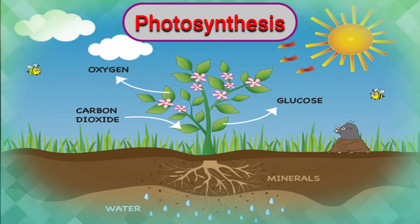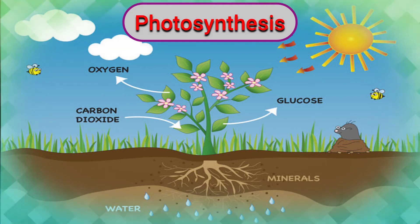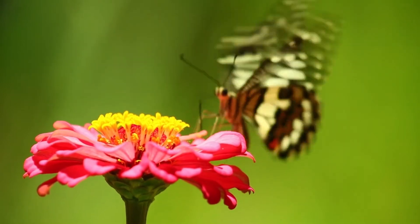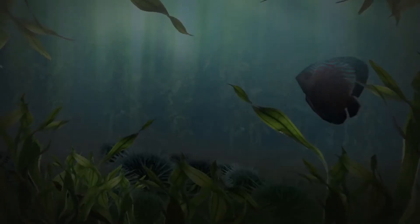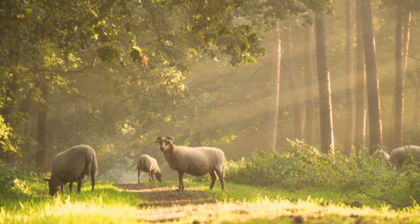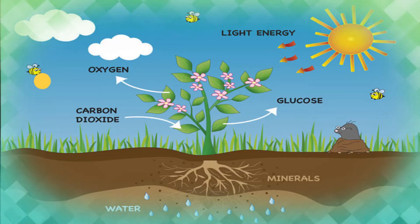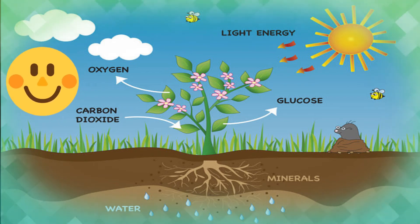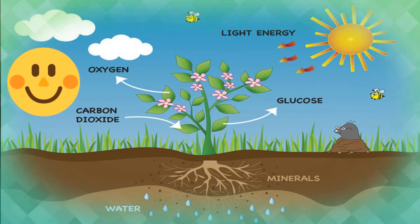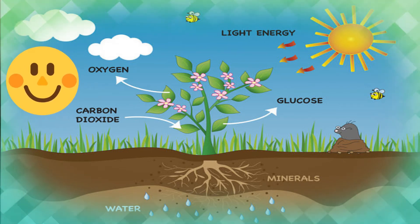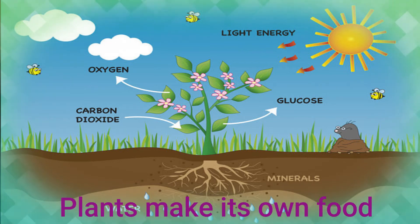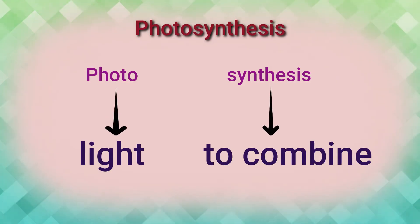Hello children, welcome! In this video we are going to learn about photosynthesis — how it is carried out and why it is important. You can see here different animals are roaming from one place to another in search of food. This plant seems very happy in its own place, but how does it get food? Plants make their own food by the process of photosynthesis.